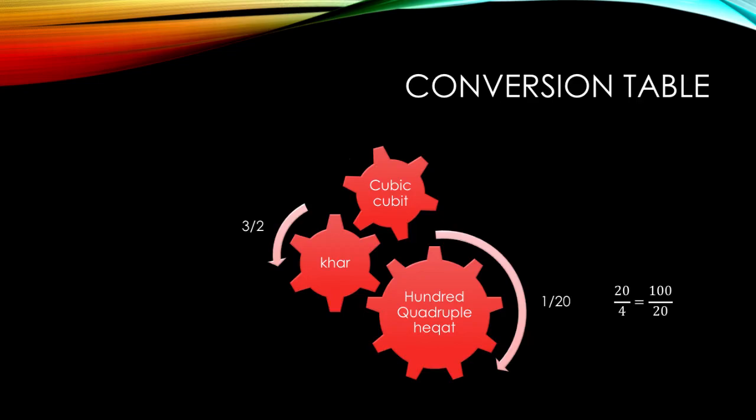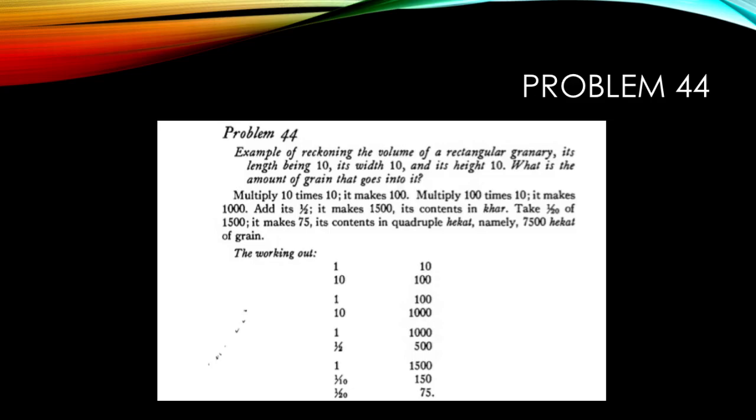So that's what they are doing here. They multiply a thousand by a half gives you 500. You sum a thousand and five hundred gives you one thousand five hundred. So that's the volume calculated in Khar.